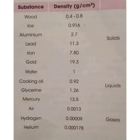Some substances are solid, some are liquid, and some are gases, and their densities differ. Density is measured in gram per centimeter cube. Solid substances include wood, ice, aluminium, lead, iron, and gold. Liquid substances include cooking oil, glycerine, and mercury. Gas substances include air, hydrogen, and helium.